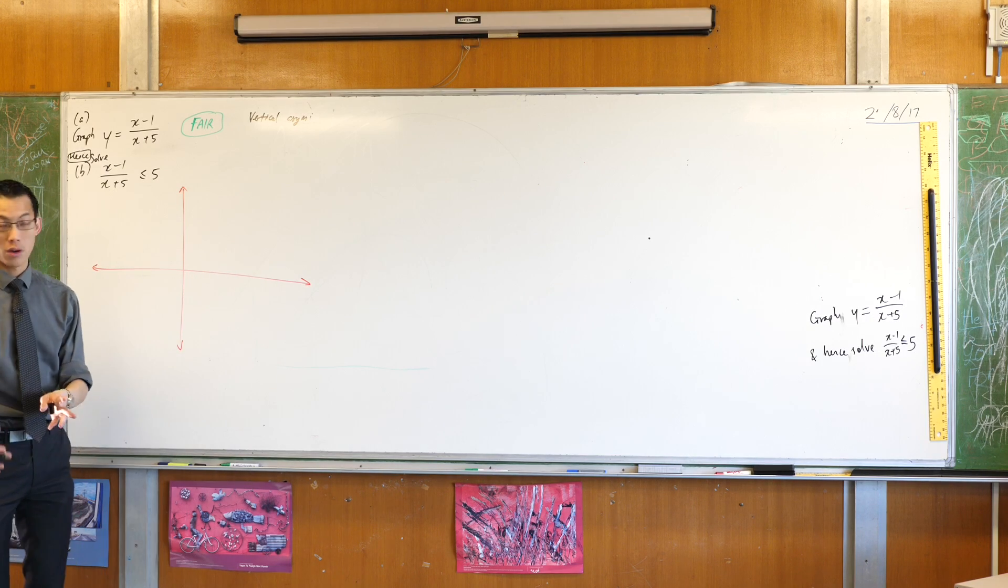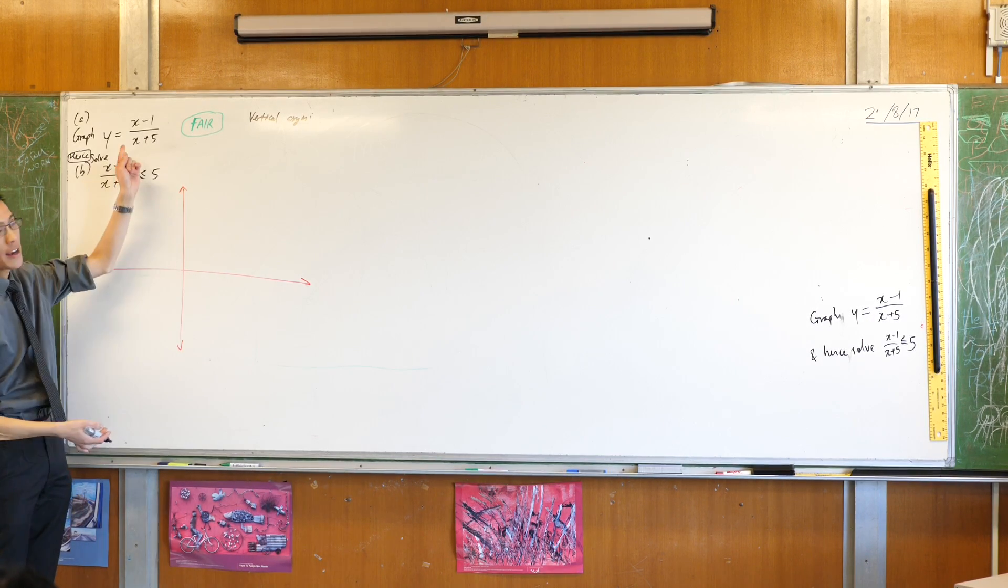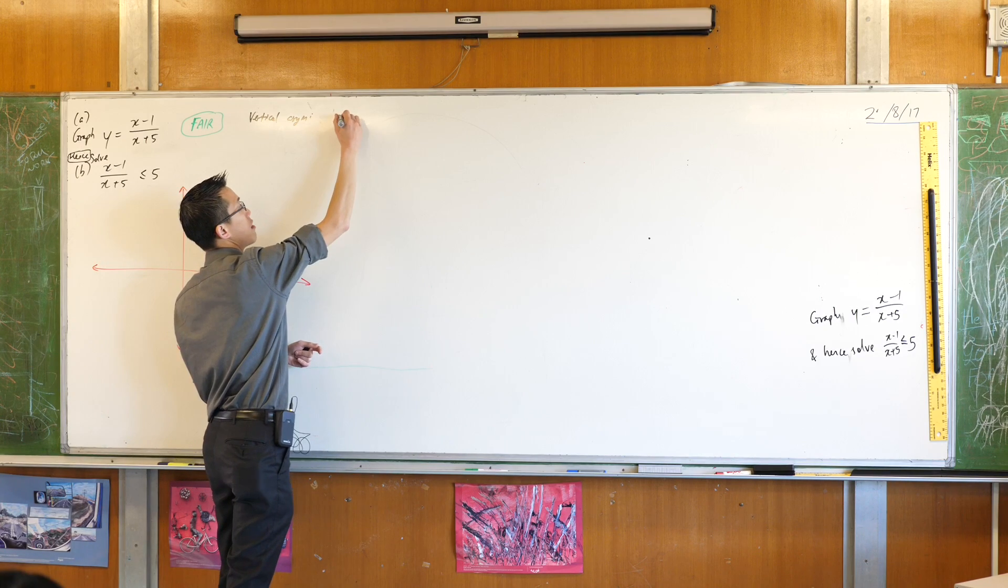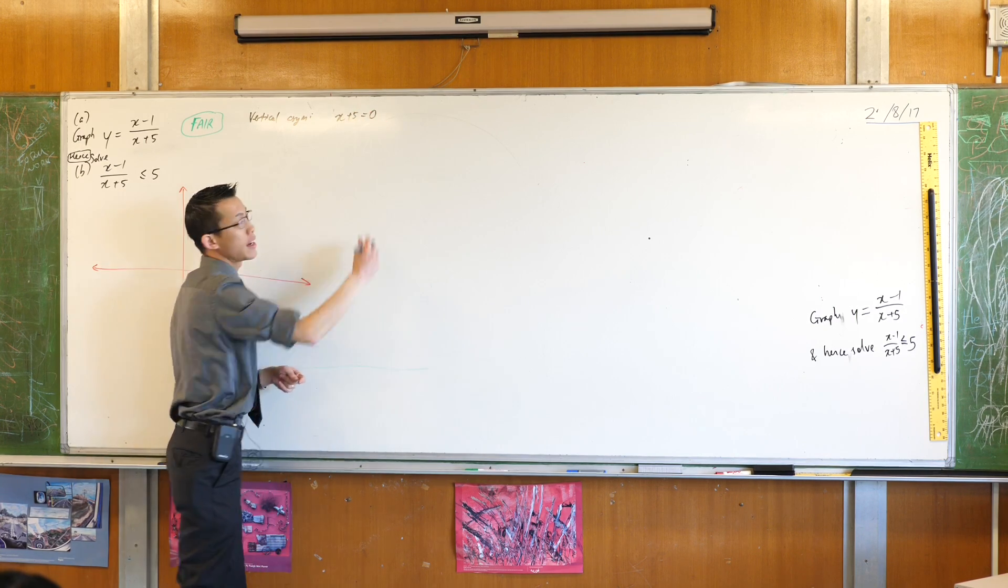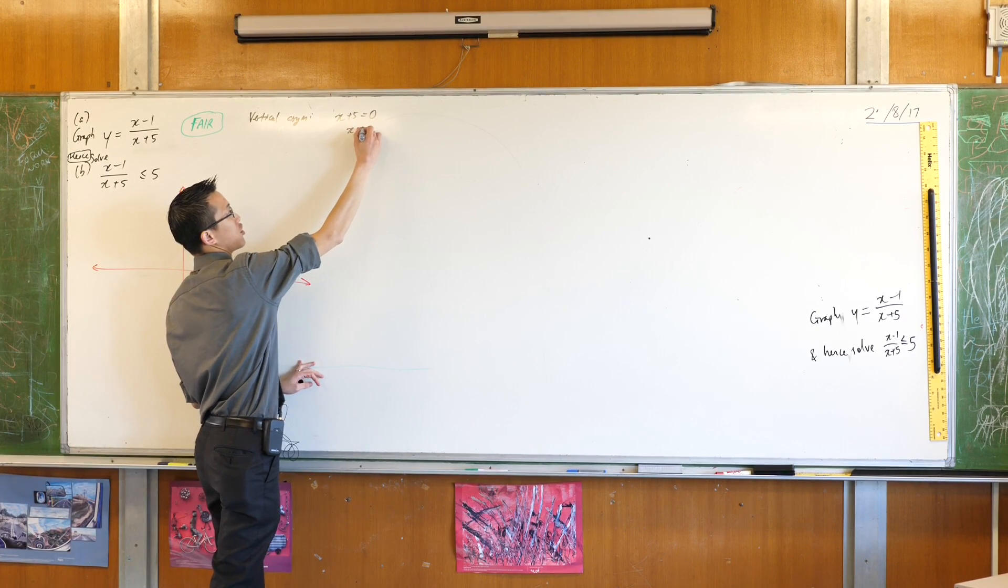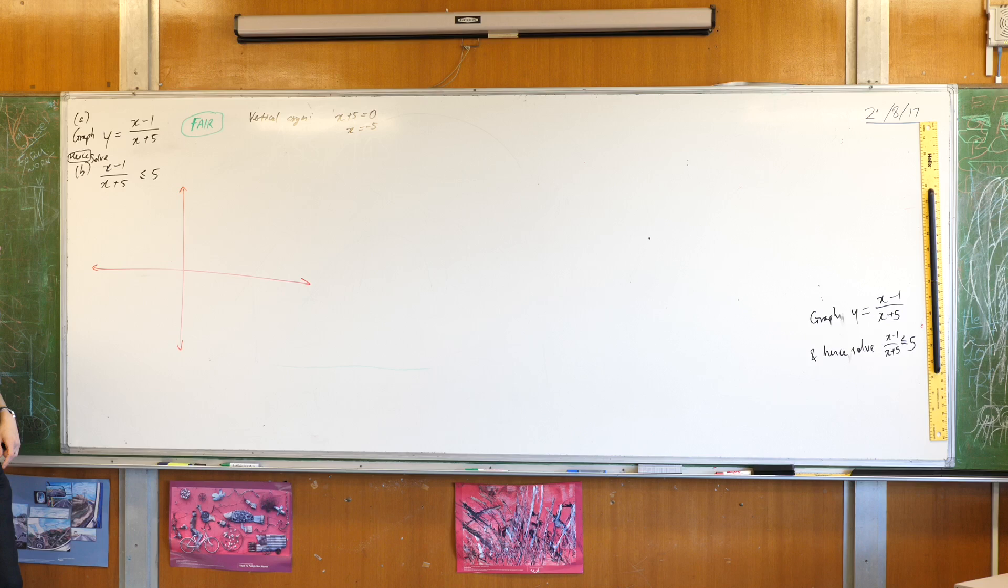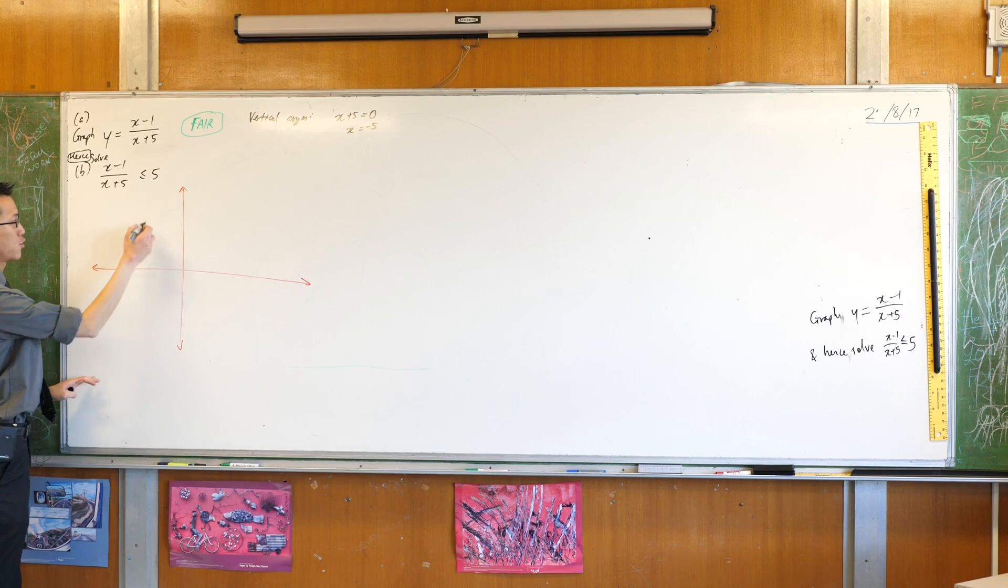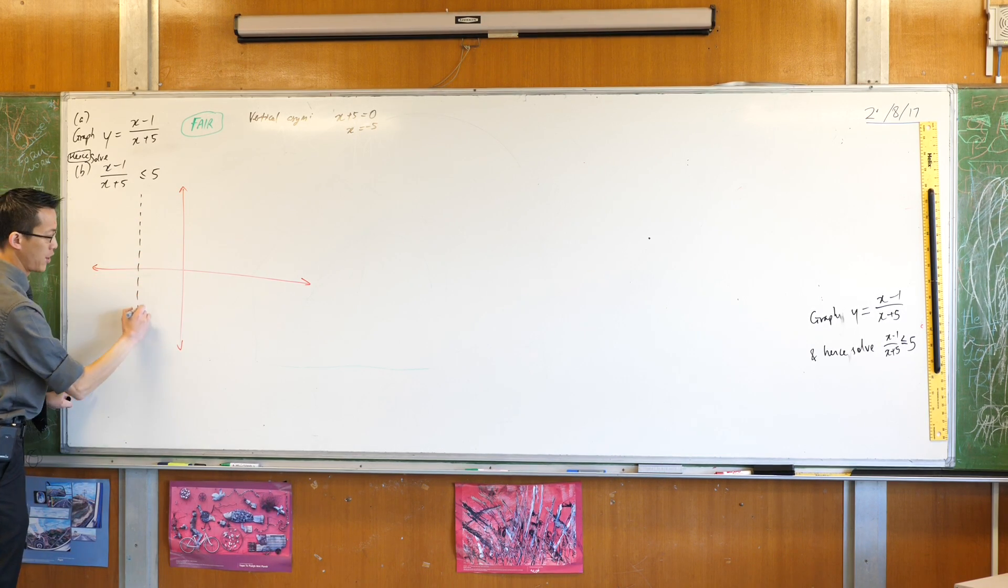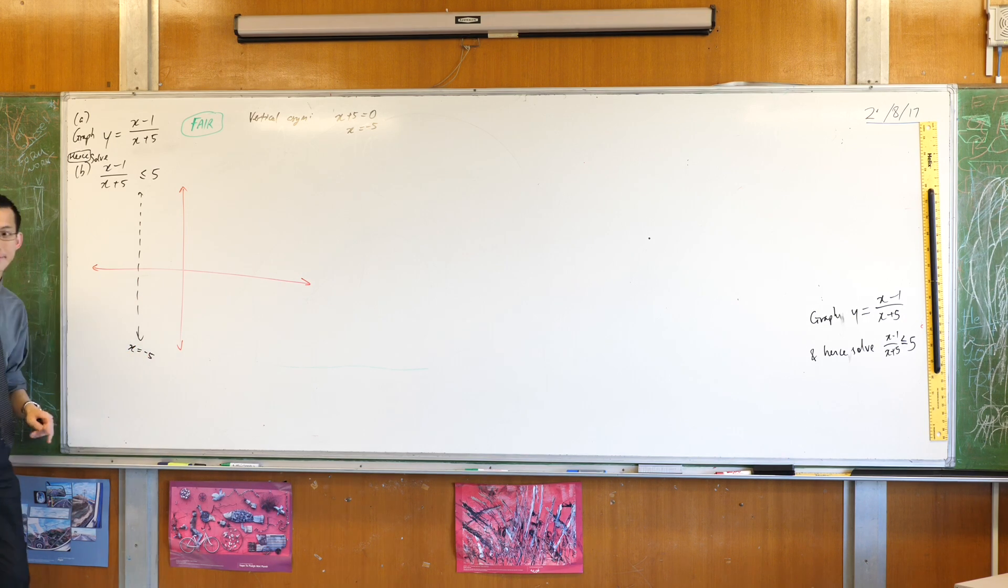Vertical asymptotes occur when the denominator is 0 because that blows up the equation. So if I say x plus 5 equals 0, you get a vertical asymptote because it's outside the domain. I just rearrange, I change and make x the subject. So x equals negative 5 is where I'm going to find my vertical asymptote. So I'm going to draw that in. Over here on the left hand side. x equals negative 5. Cool.